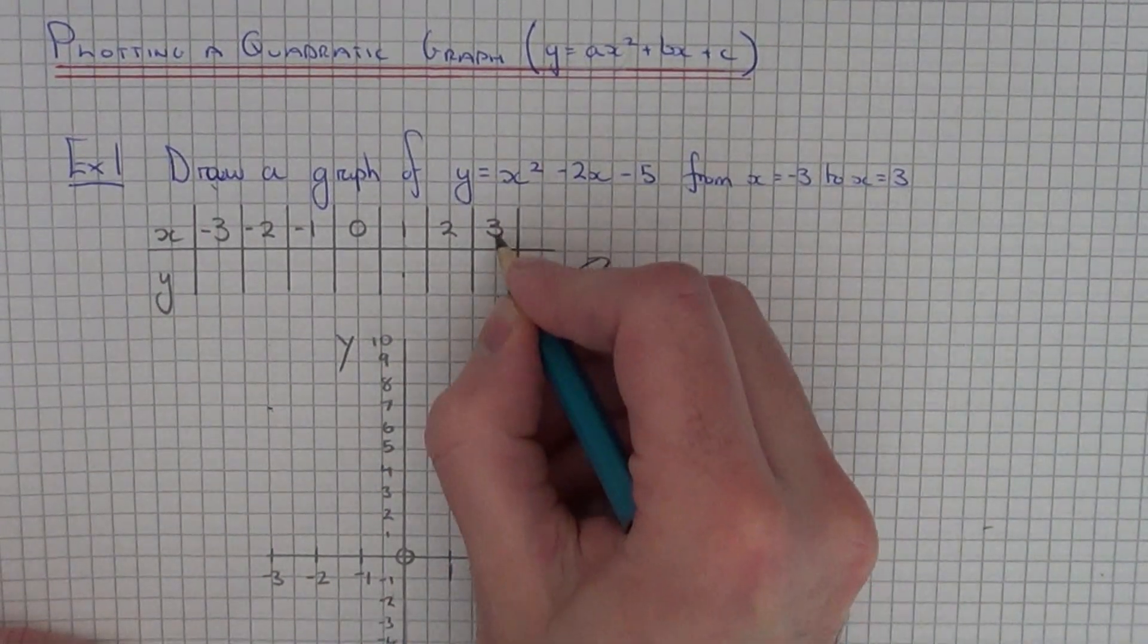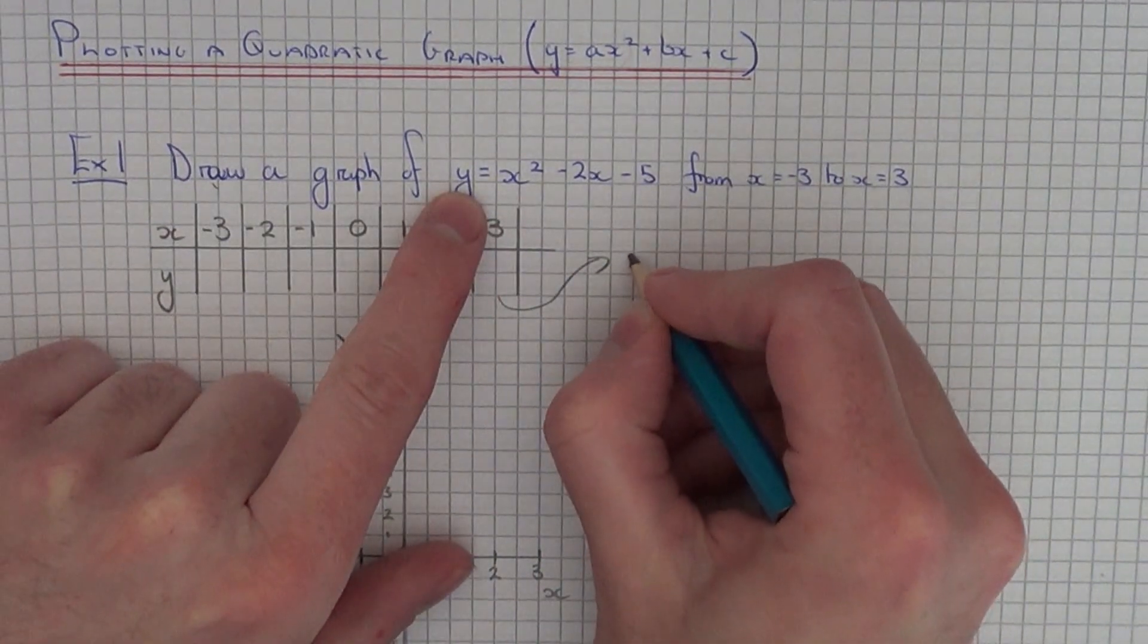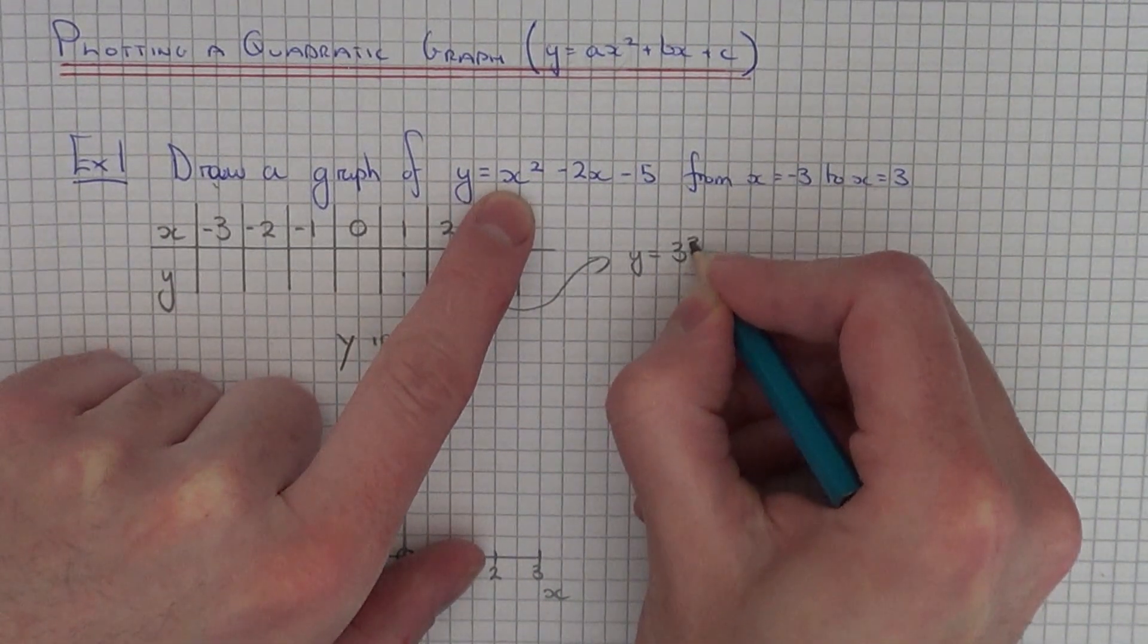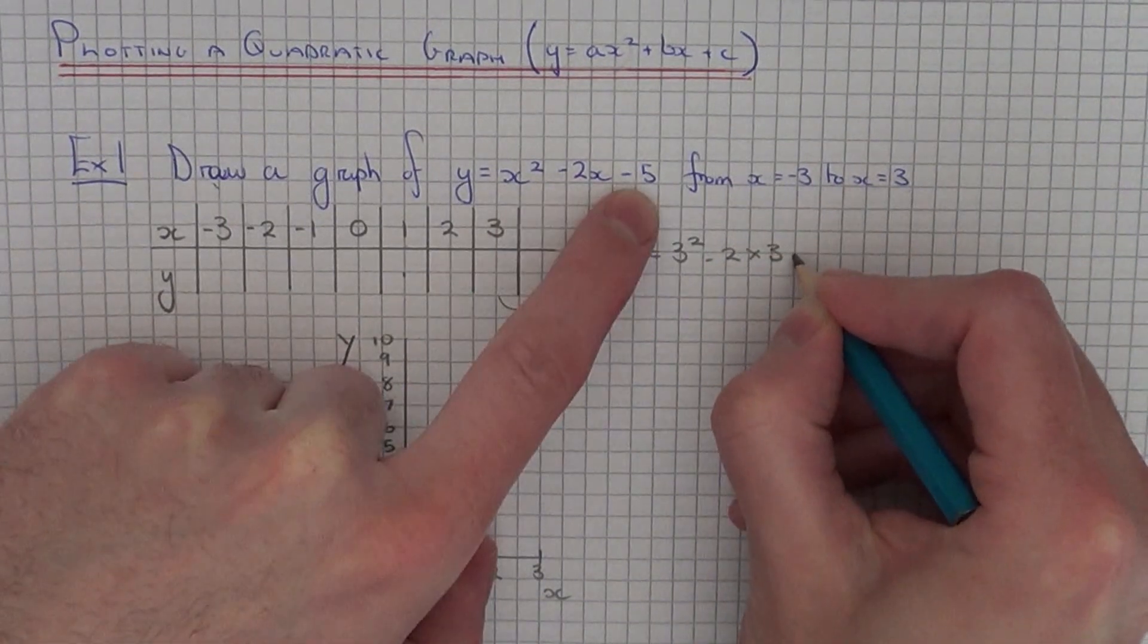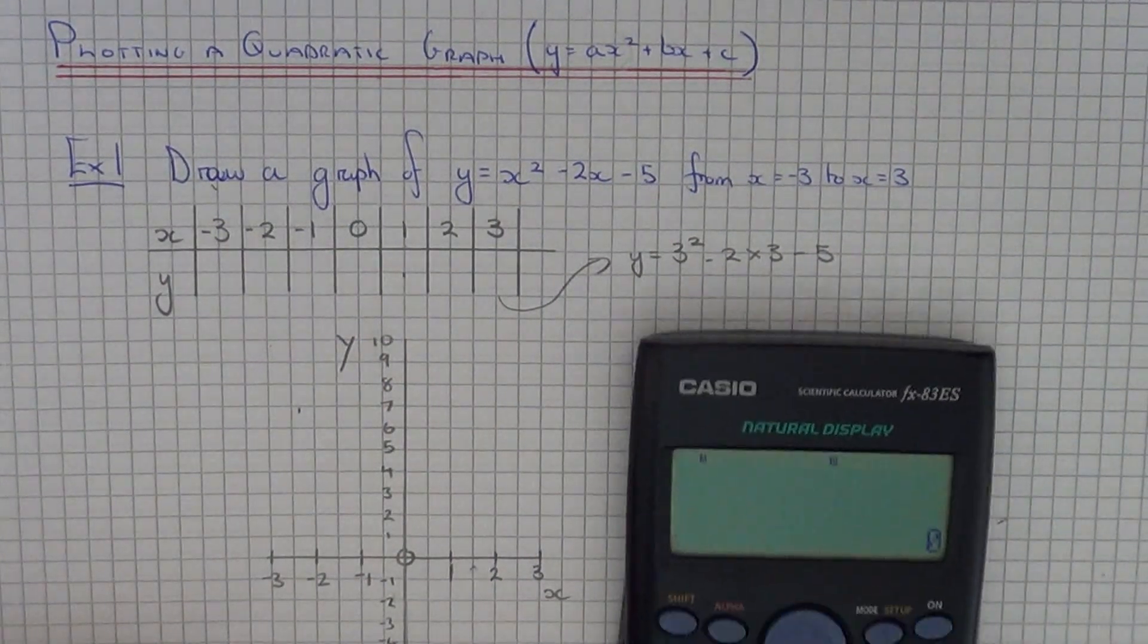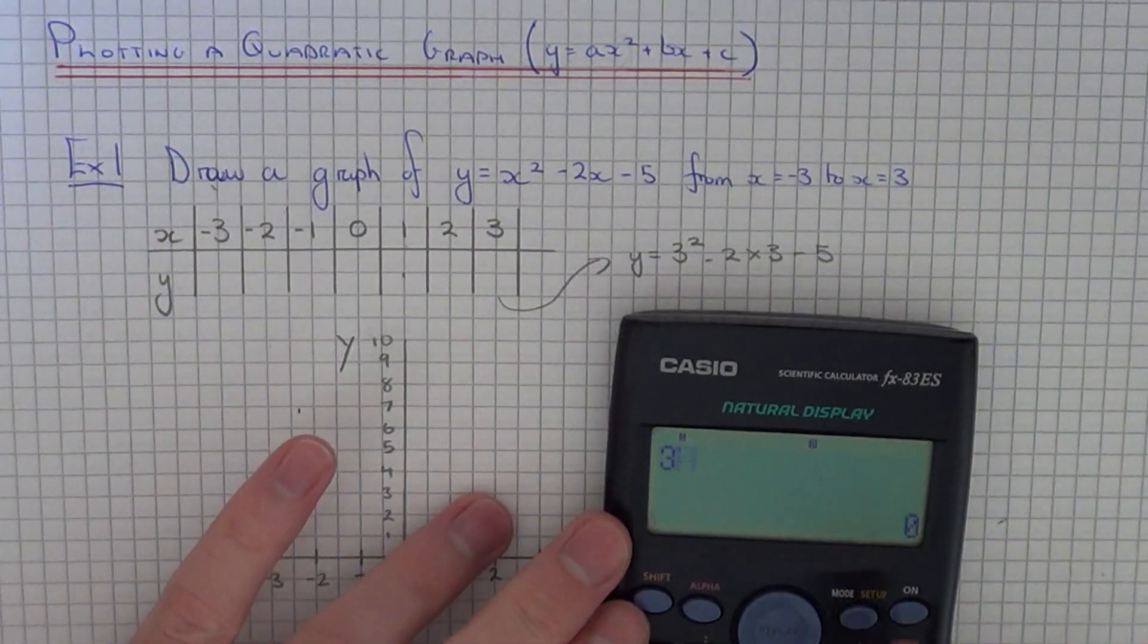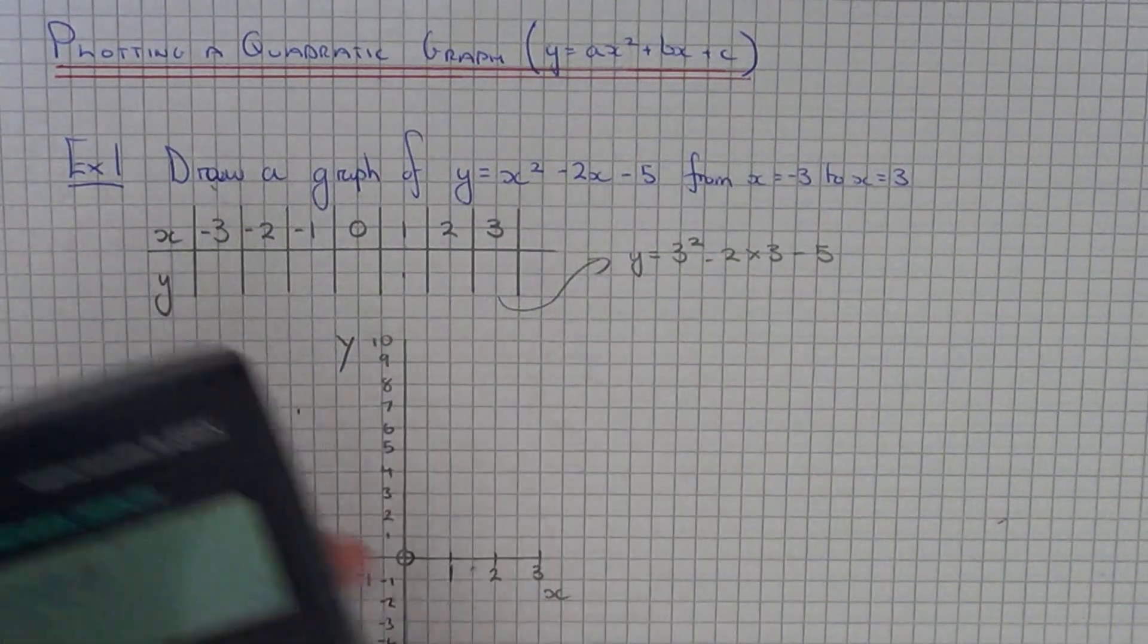So first of all I'm going to start with x equals 3. So if I substitute it into our equation it will be y equals 3 squared minus 2 times 3 take away 5. So if you've got a calculator you can type it in as it is. So it will be 3 squared minus 2 times 3 minus 5. So that will give you minus 2.